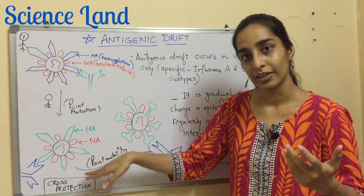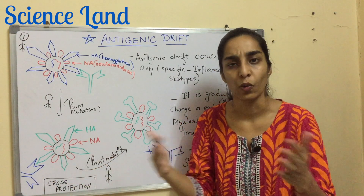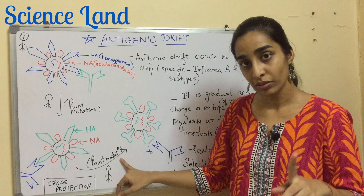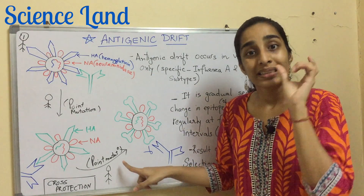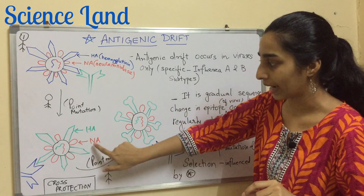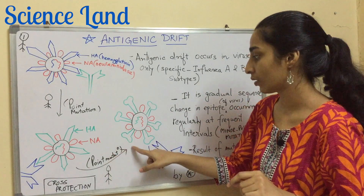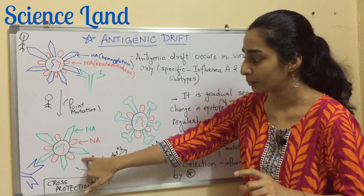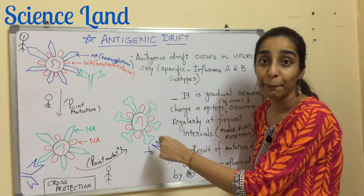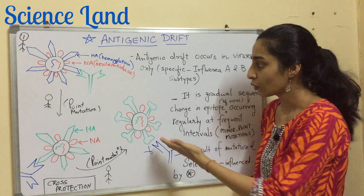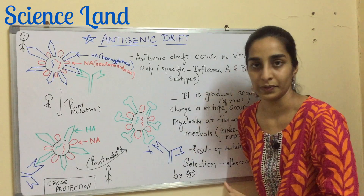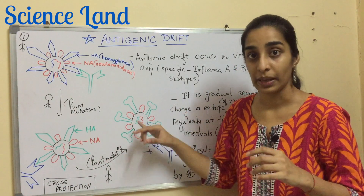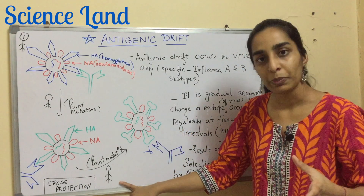The virus is upset because the antibody is already present in the host population. This time, the virus undergoes a point mutation essentially in the sequence related to the epitope. The triangular epitope changes into a crown-structured epitope. In the third person, the antibody is specific to the triangular epitope, but now the virus's epitope has changed, so there is no reaction. The virus successfully infects this person.